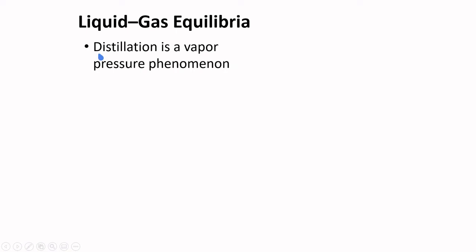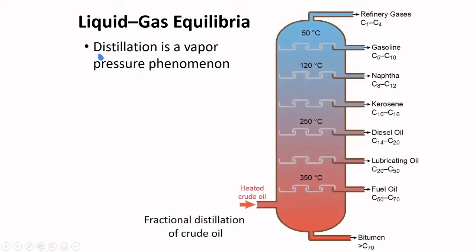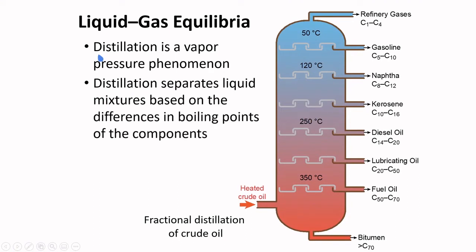Distillation is a vapor pressure phenomenon. Distillation separates liquid mixtures based on the differences in boiling points of the component. A good example here is the fractional distillation of crude oil. As heated crude oil passes through this system, the vaporized crude oil can condense at different temperatures. Hence, they can be separated.